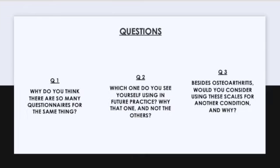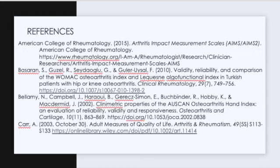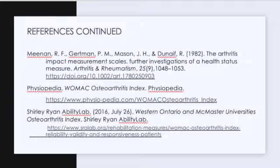Some discussion questions: Why do you think there are so many questionnaires for the same thing? Which one do you see yourself using in future practice, and why that one and not the others? And besides osteoarthritis and rheumatoid arthritis, would you consider using these scales for another condition and why? These are my references. Thank you for watching.